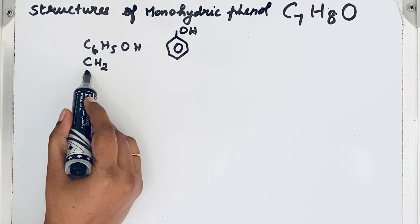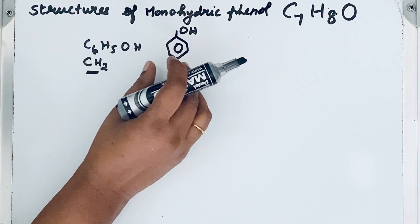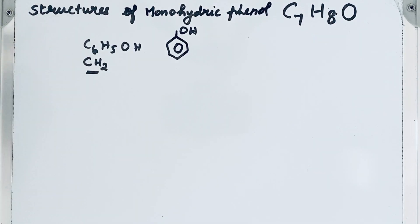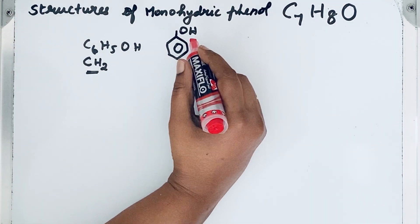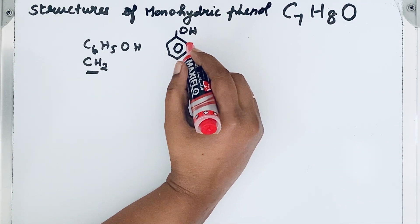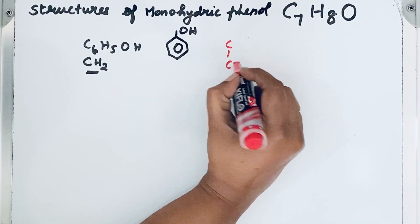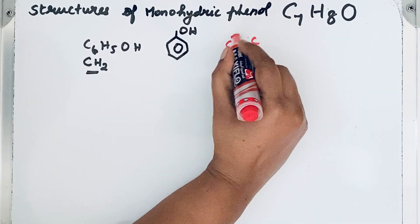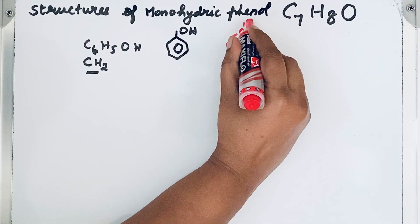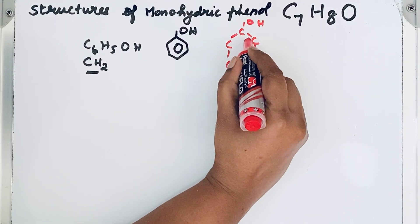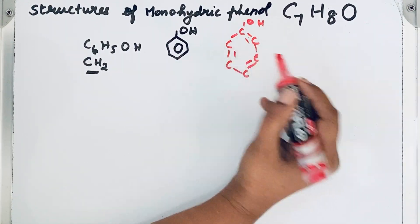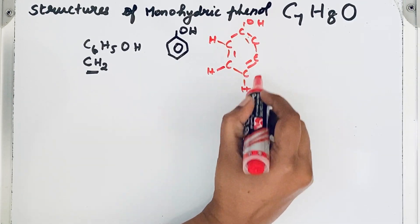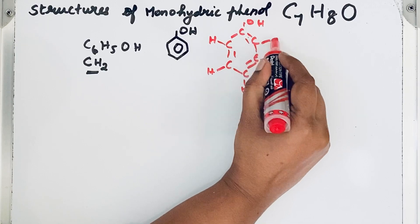One CH2 group we can add to this phenol. For that, first let us draw the complete structural formula of phenol. That will help you to understand very clearly. Here OH group, then alternating double bonds, remaining all other carbons are attached with hydrogen atoms.